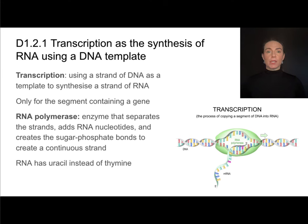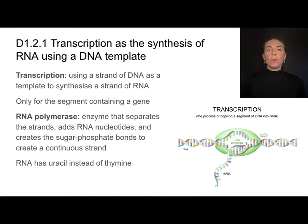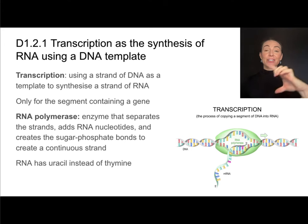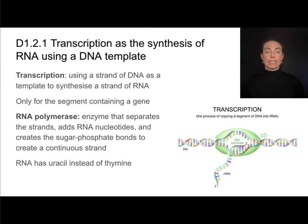Transcription is the process of using a strand of DNA as a template to create a strand of RNA. We only want to do this for the gene that is being expressed, so we're only going to transcribe a segment of DNA called a gene. Genes code for proteins, and in order to do this, we'll need an enzyme called RNA polymerase.